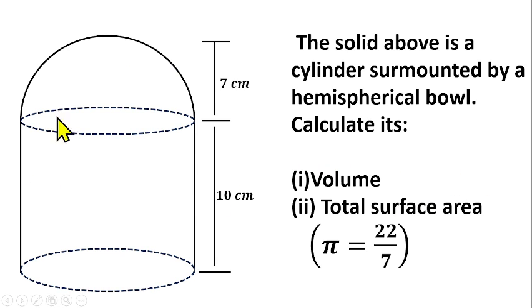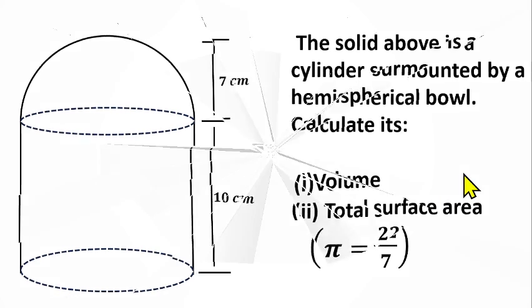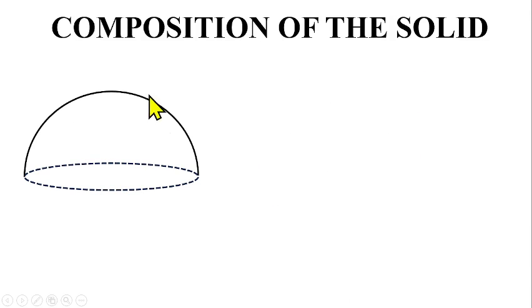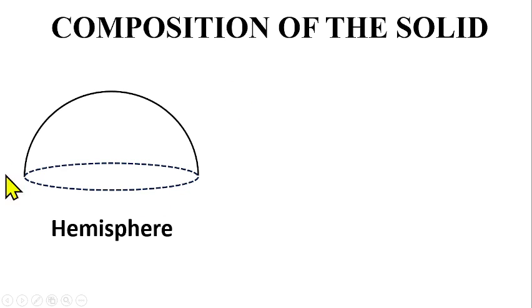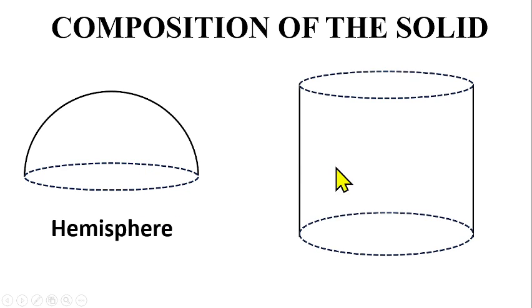Before we solve this, let's look at the decomposition of the two shapes that make up this solid. A hemisphere is half of a sphere — that is, when you divide a sphere into two, you have a hemisphere. It's just like a bowl. And we also have a cylinder.